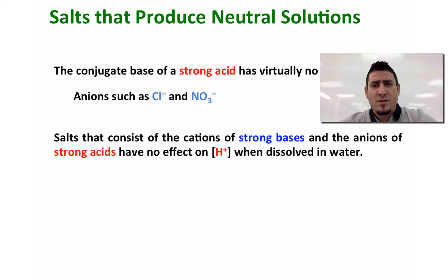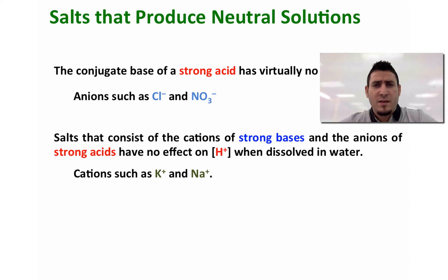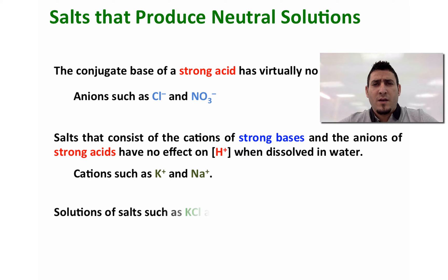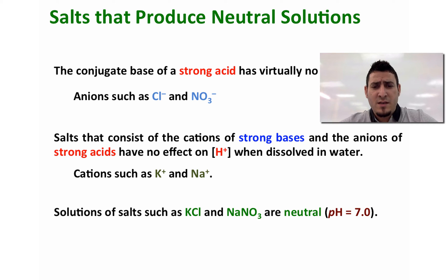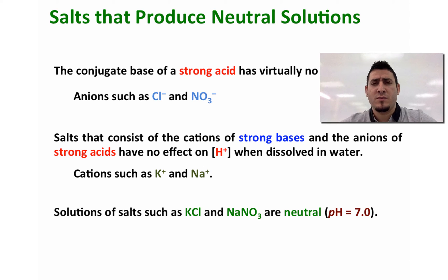Cations such as K+ and Na+ will not affect the concentration of H+ in solution. Solutions of salts such as KCl, NaNO3, etc. will be neutral and the pH of these solutions will be equal to 7.